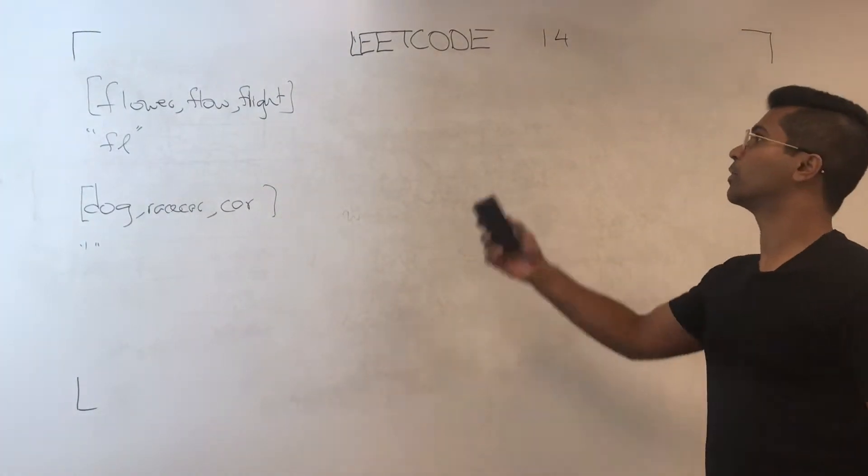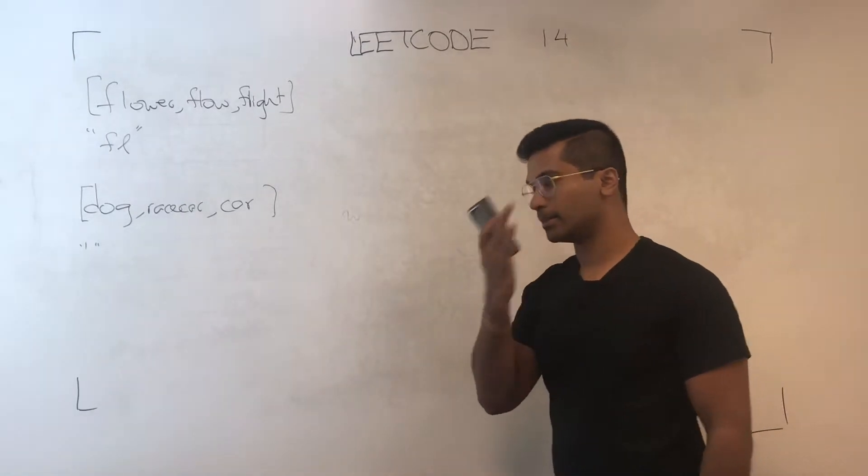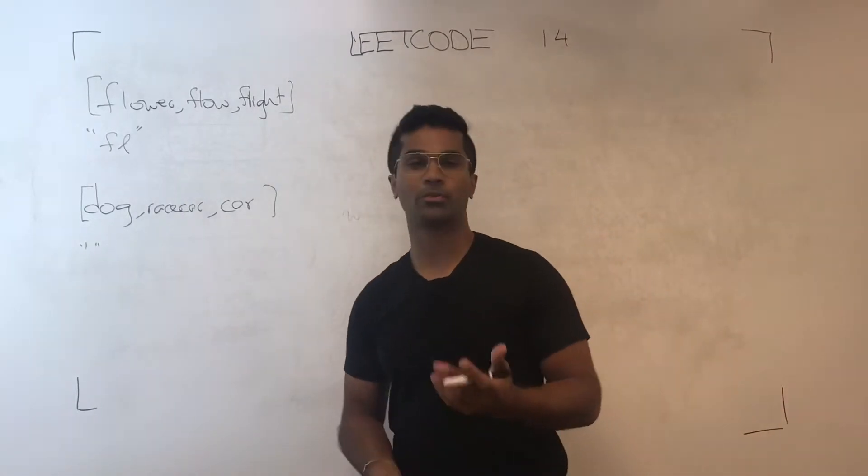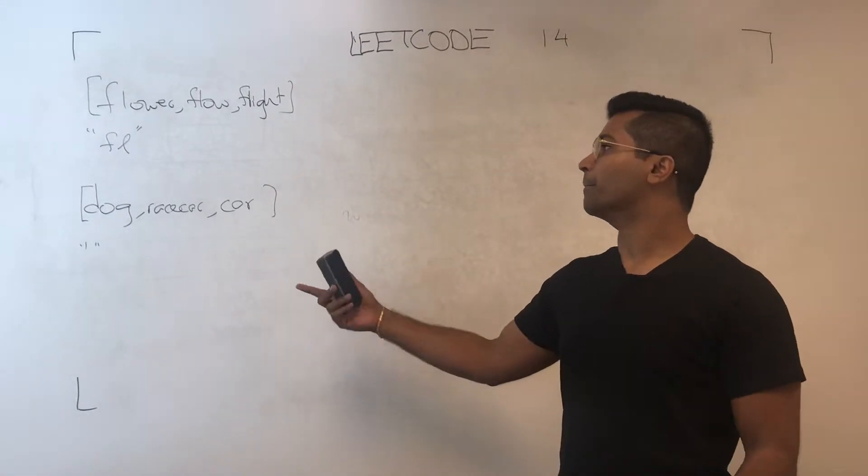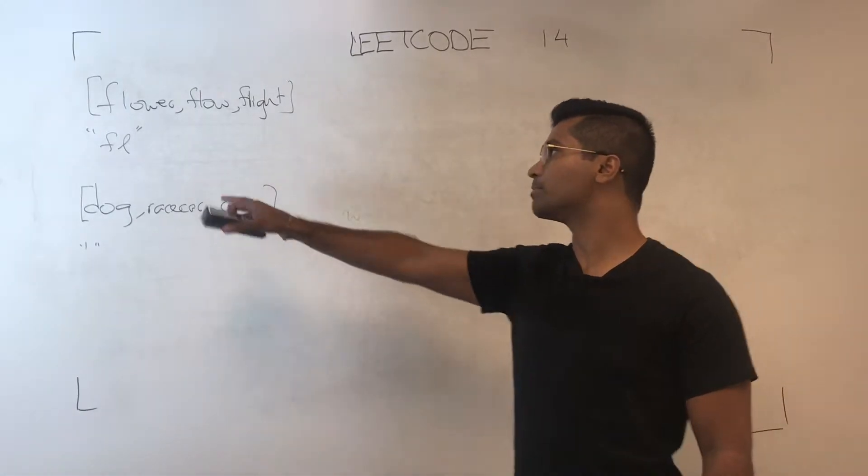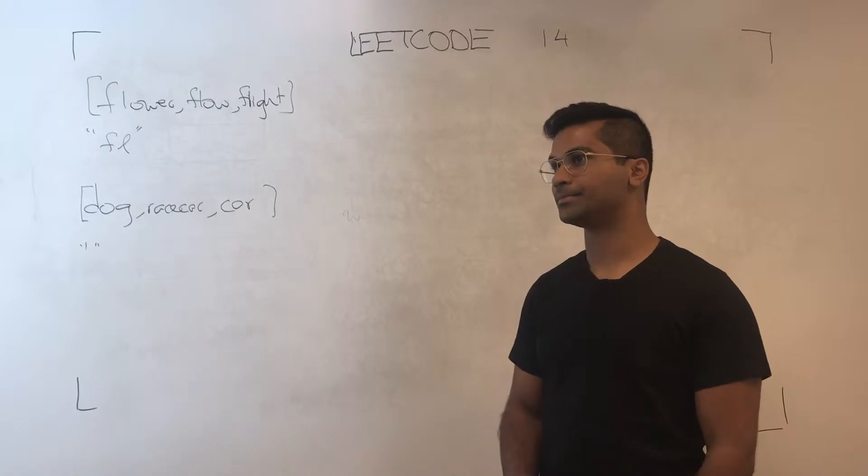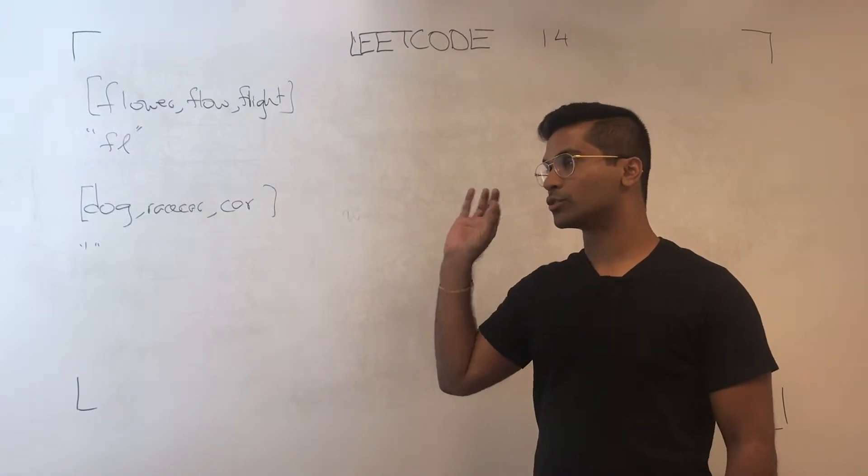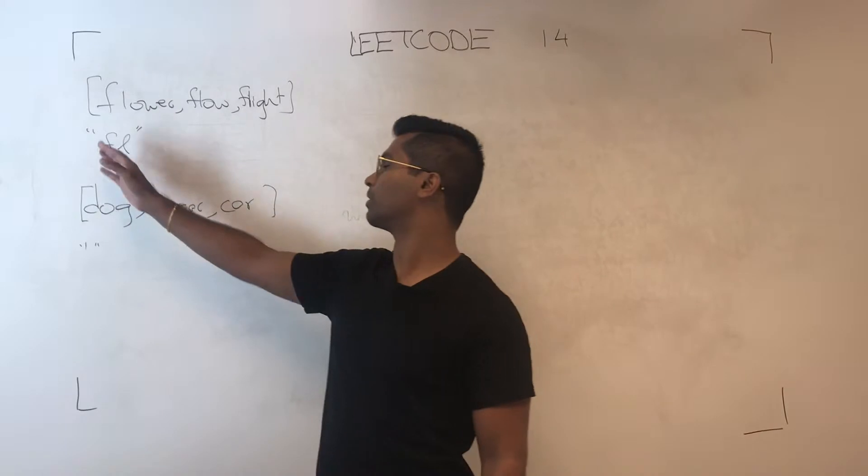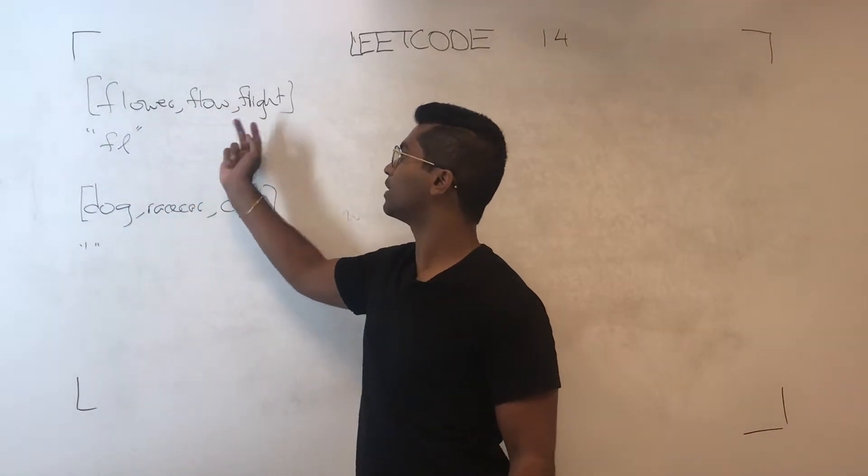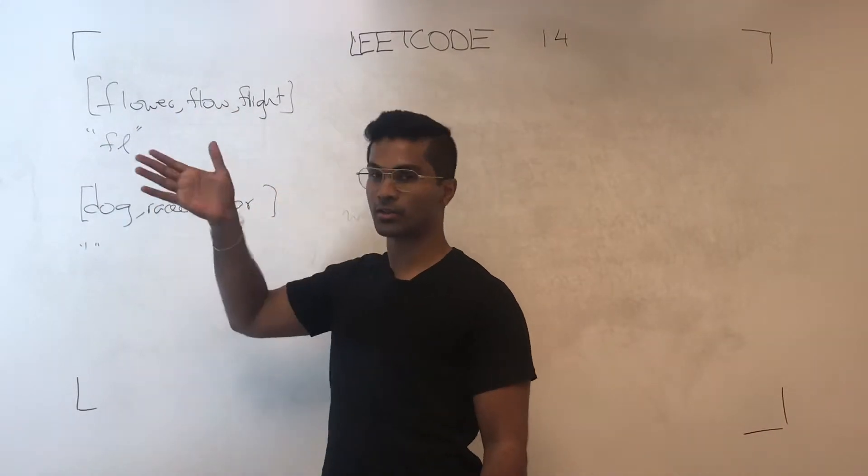What's up everyone, today we're going to be going over LeetCode number 14. This is a pretty well known problem. The input is going to be an array of strings and they want the string which is common among all of them. So flower, flow, and flight have FL in common that they start with.